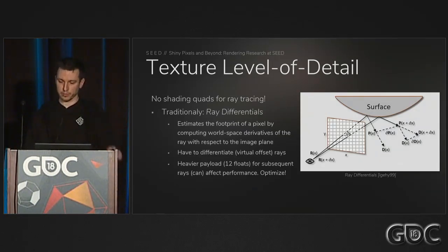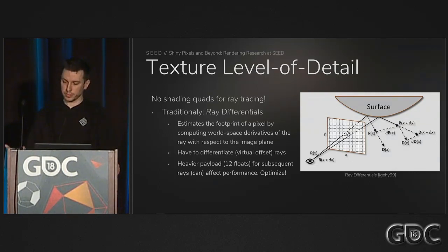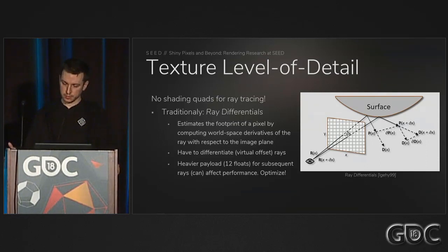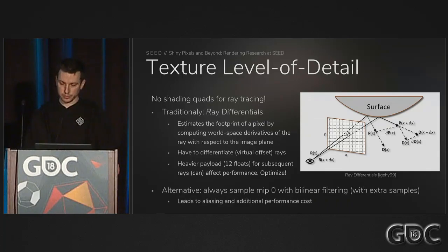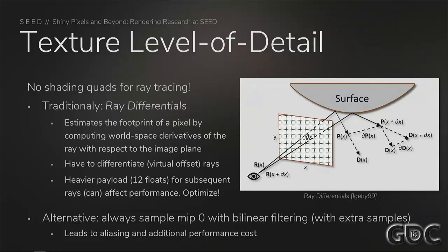Traditionally, this is handled with ray differentials. But computing ray differentials requires differentiating all the elements in the equation for virtual offset rays on the triangle plane and storing this data in the payload. Obviously that's not free, especially over time for subsequent rays. An alternative is to always sample mip zero and do more samples, but that leads to aliasing and additional performance costs.